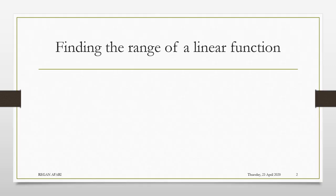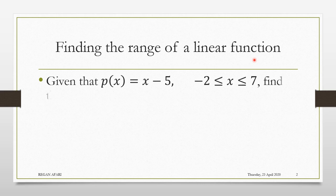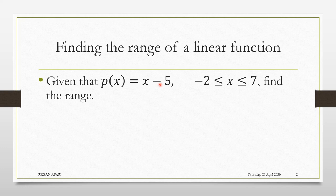Let's start with a linear function. When we say that a function is linear, it means that the highest power of x is 1. When the highest power of x is more than 1, then that is called a non-linear function.